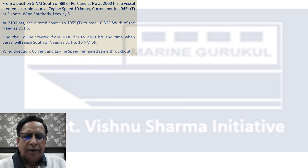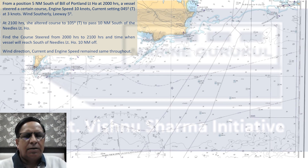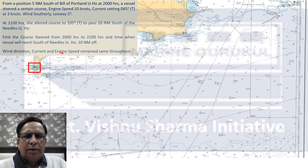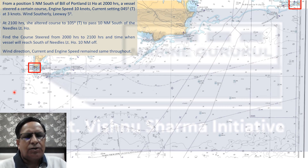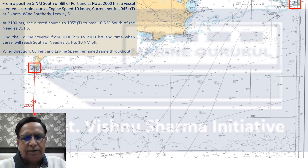Here is the chart of the region for this question. Here we have the Bill of Portland Light and here we have the Needles Light. From the given information we can plot the 2000-hour position by bearing and distance from Portland Light, and on the chart we have the 2000-hour fix coming up.